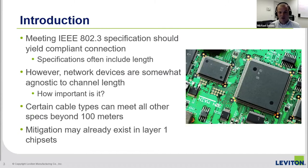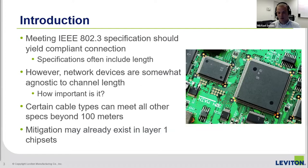In theory, meeting an IEEE 802.3 standard should mean that you can yield a compliant connection. A lot of times those specifications include length, and often that length is 100 meters. However, some network devices are agnostic to actual channel length — they can measure delay between endpoints, which depends on nominal velocity of propagation, but that varies between cables, so there's no direct measurement of length. We know certain cable types can meet other specs beyond 100 meters, for example a 22-gauge cable can easily meet the 1000BaseT insertion loss requirement well beyond 100 meters.